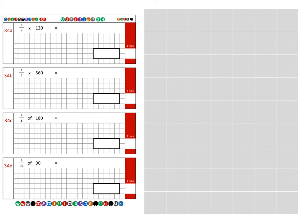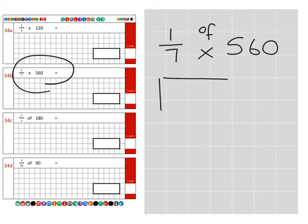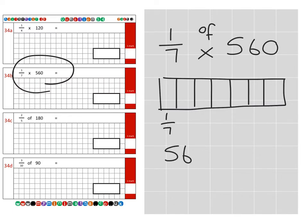Next we're on to question 34b, which is calculating one seventh times or of 560. So again, if we take the full 560 as a box and then we divide it into seven equal parts, that's three, four, five, six, seven. Each of these boxes is worth one seventh. If we take 560 divided by 7, it gives us 80 for each of these sevenths. So the final answer: one seventh of 560 equals 80.